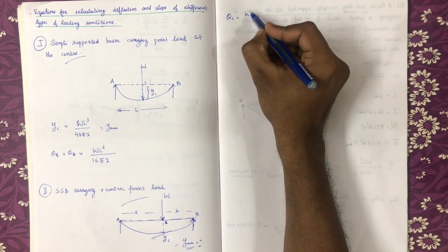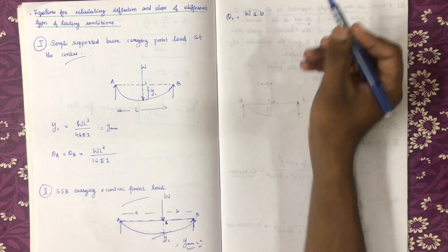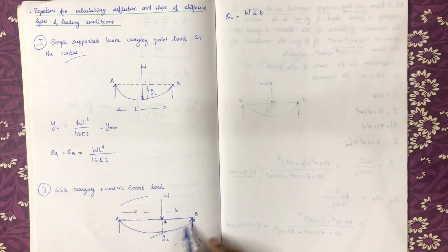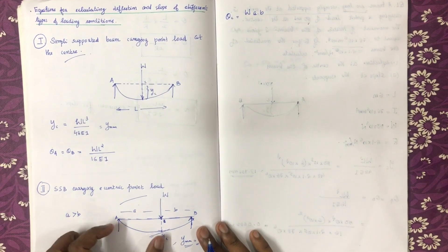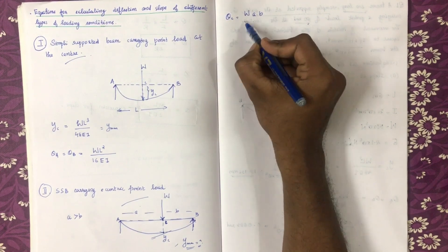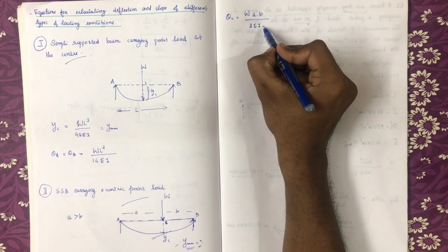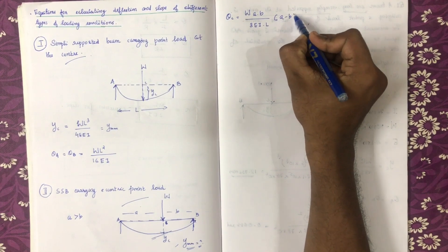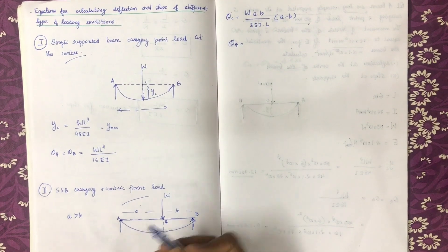W into A — where A is the load distance. On the left-hand side, A is greater than B. Now we have the maximum deflection: W into A into B, divided by 3EI into L. Theta A is the slope on the left-hand side, not the deflection.